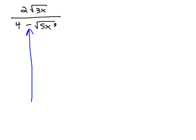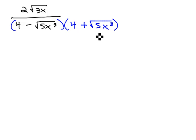We can't just multiply by root 5x cubed. So the conjugate is going to be made up of the same terms with the opposite signs, 4 plus the square root of 5x cubed, numerator and denominator.